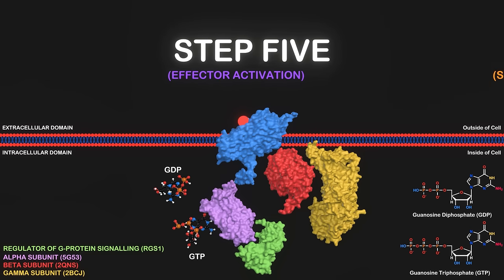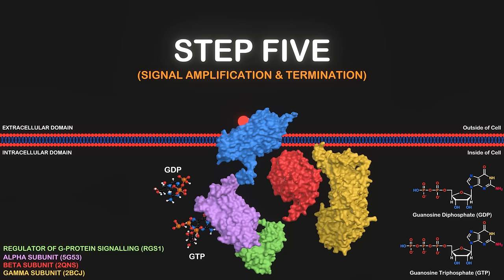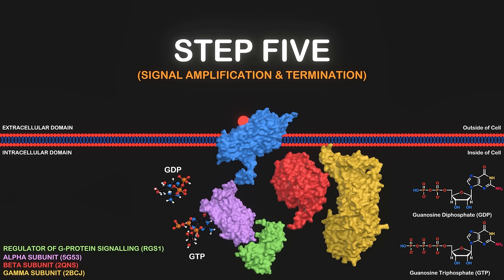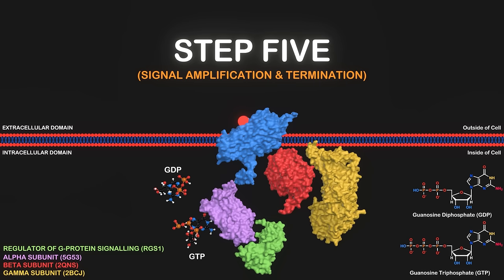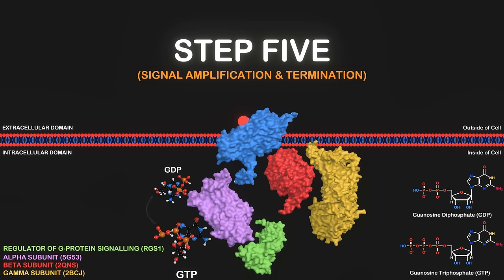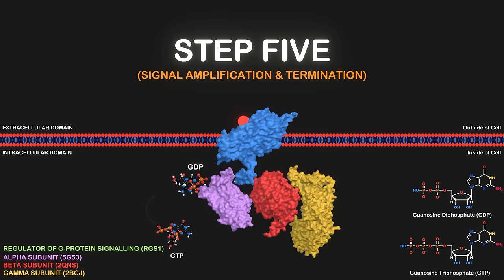The fifth step is signal amplification and termination. The activated alpha subunit or the beta-gamma subunits can interact with multiple effector molecules, leading to the amplification of the initial signal. The signaling cascade continues until the GTP on the alpha subunit is hydrolyzed to GDP, which is just going from the triphosphate to the diphosphate. This is where we lose energy and I like to think about GTP as the Canadian dollar of the cell. It's not used as much as ATP, but it's still common enough. The hydrolysis of GTP to GDP causes the reassembly of the G-protein complex and terminates the signal.